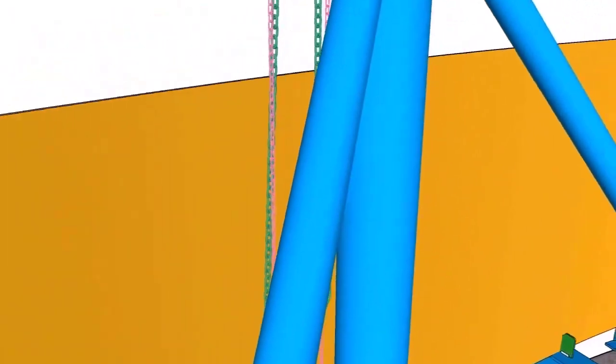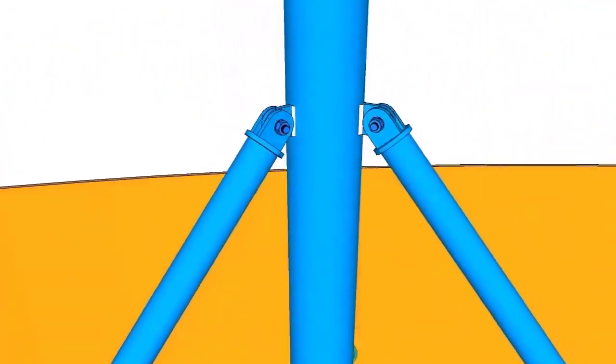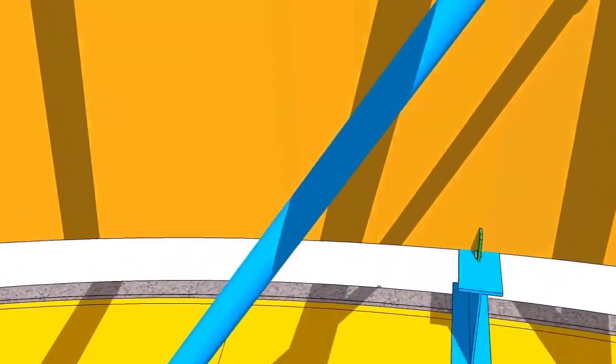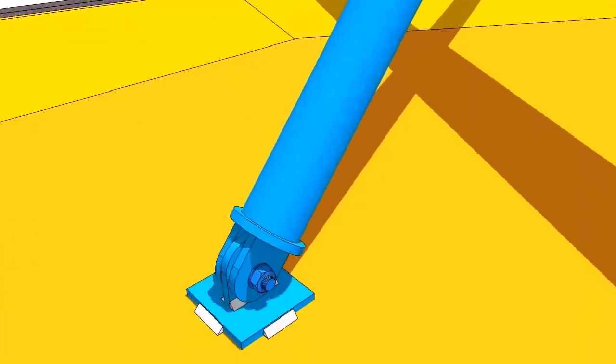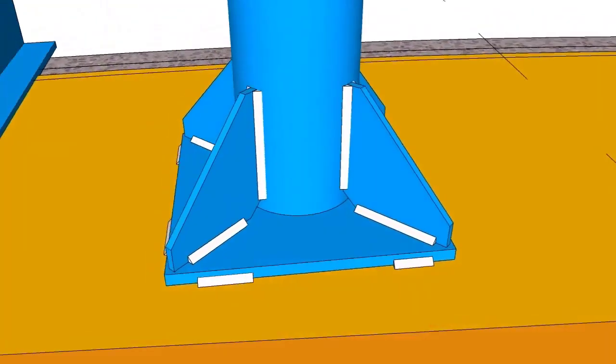Hooks are made from 25 millimeters thick plates. The base plate is 450 millimeters square and is 20 millimeters thick.